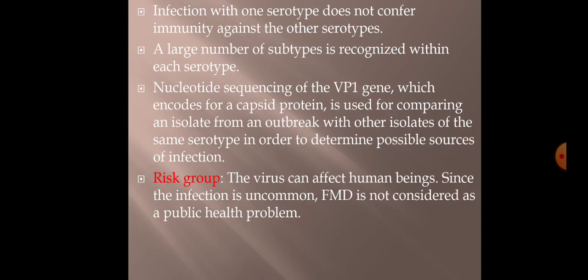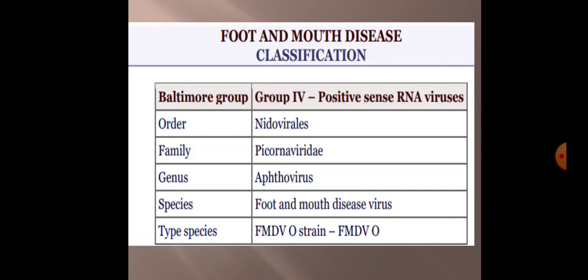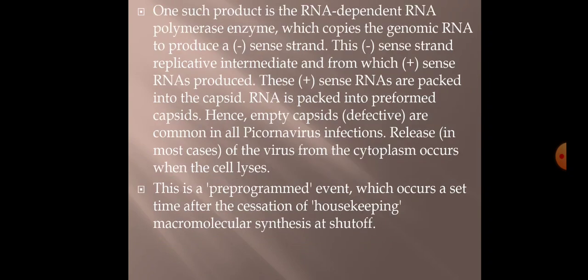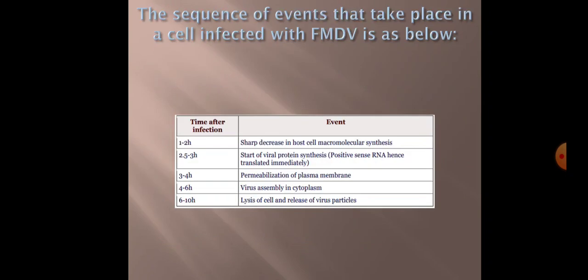The classification of FMD: Baltimore Group 4, order Nidovirales, family Picornaviridae, genus Aphthovirus, species foot and mouth disease virus, and the type species most commonly prevalent is strain O. Replication occurs in the cytoplasm and is very rapid — the cycle gets completed between 5 to 10 hours. The positive-sense genome directly acts as mRNA, which gets translated into certain proteins.